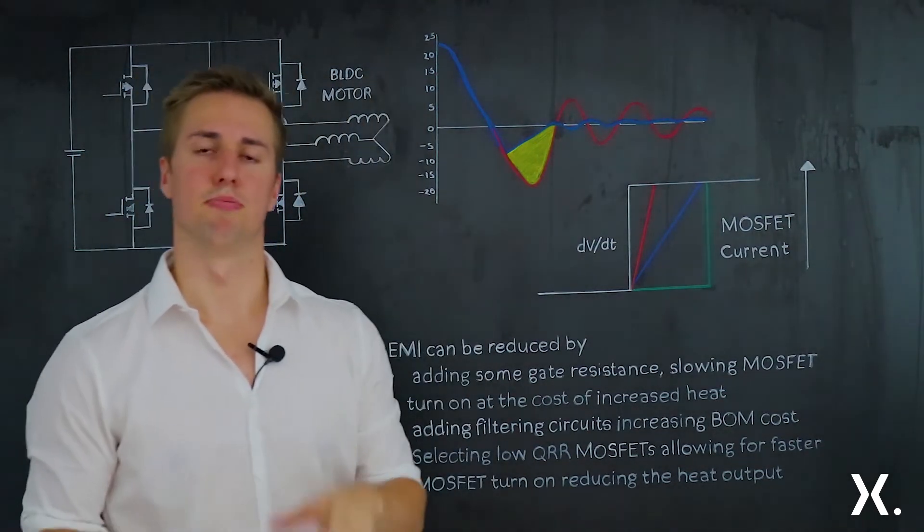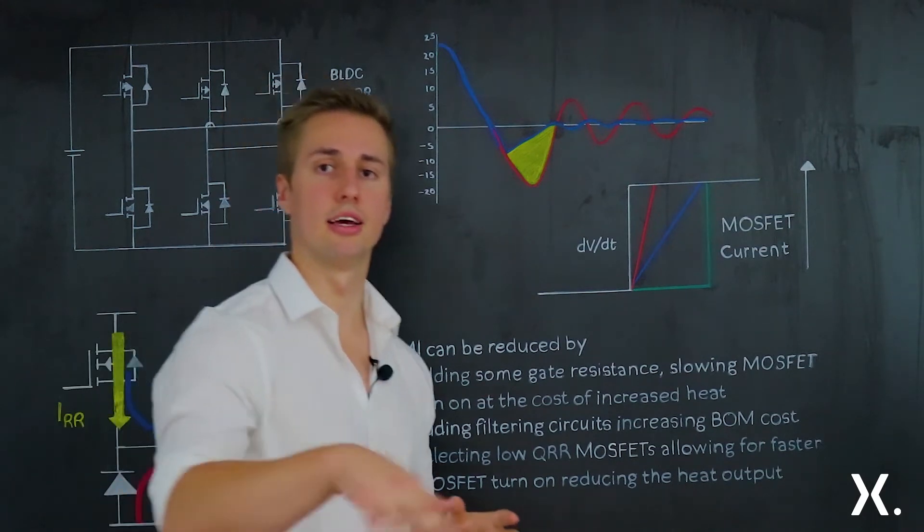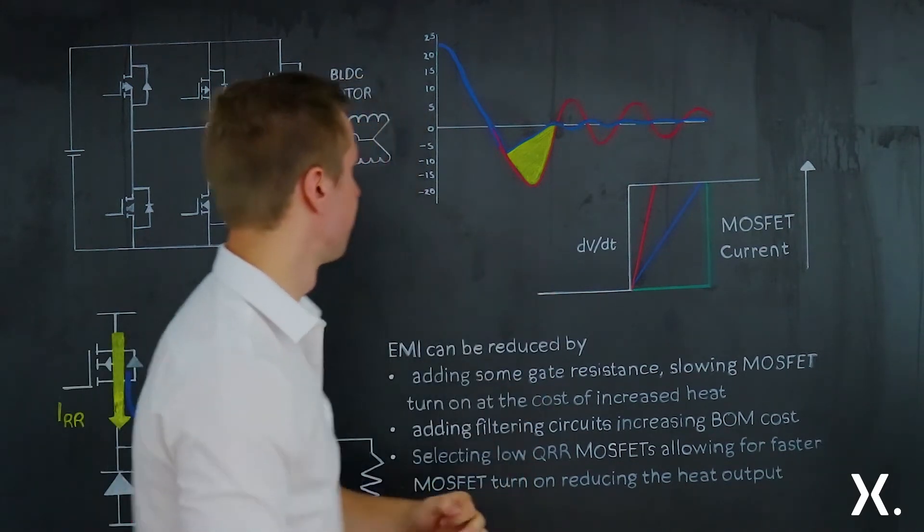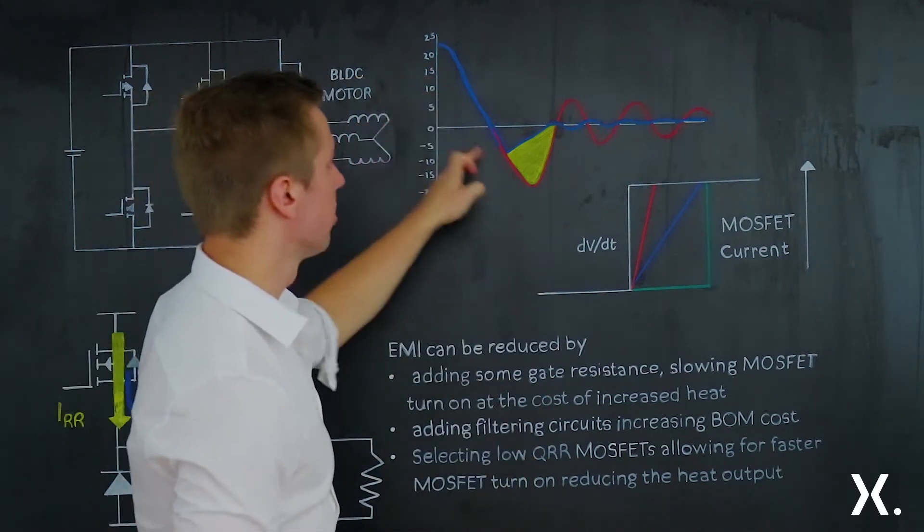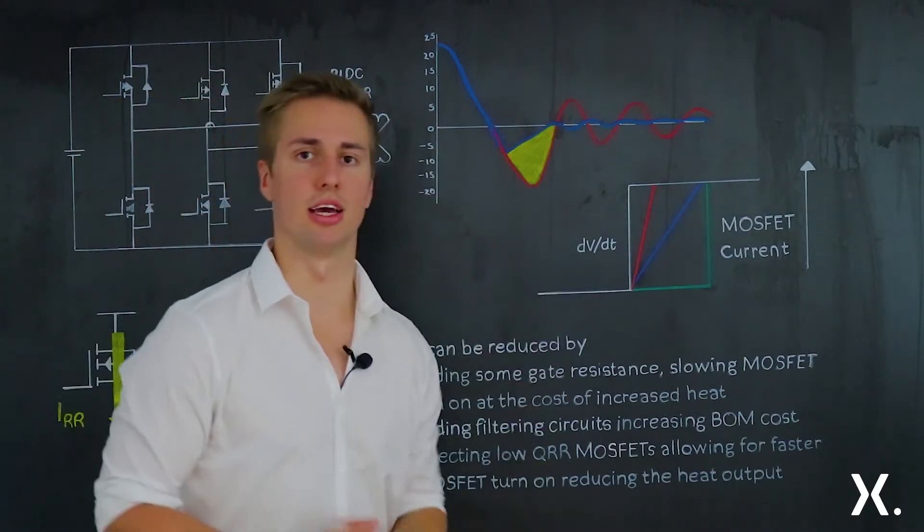The ringing comes from the QRR and PCB strain inductance working together to oscillate and pushing current back and forth. While with a lower QRR device you have a lower spike and you also have lower ringing.